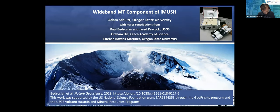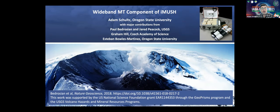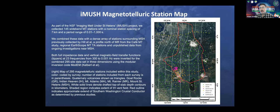I'm going to give a brief overview of the magnetotelluric component of the IMUSH project — Imaging Melt Under St. Helens — jointly conceived by me and Paul Bedrosian at USGS, with contributions from Jared Peacock, Graham Hill, and Esteban Rose Martinez. The 3D model appears in a Nature Geoscience paper in 2018. IMUSH was an active and passive seismic experiment centered at Mount St. Helens, as well as a wideband MT experiment. The footprint of the wideband experiment was larger than the seismic experiments, covering the Southern Washington Cascades with Mount Rainier, Mount Adams, and Mount St. Helens.